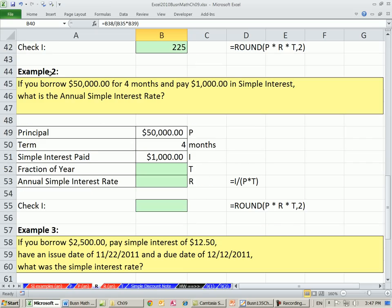Here's our second example. If you borrow $50,000 for four months and pay $1,000 in simple interest, what's the annual simple interest rate? Our 50K, there's the interest we earned, and it was for four months. Let's calculate fraction of the year. This is months, so we divide by 12.